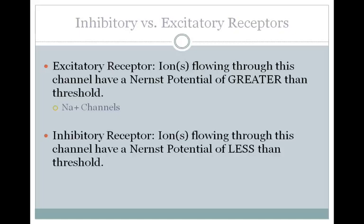Inhibitory receptors, on the other hand, will open up ion channels that allow an ion or ions to flow through that have a Nernst potential of less than threshold. This means that ion channel is going to want the membrane potential to be below threshold, which will keep the neuron from firing and inhibit it. Potassium and chloride channels are the two most common inhibitory channels. Potassium has an equilibrium potential that's well below threshold. If you open up potassium channels, potassium is going to leave the cell, cause an IPSP, and hyperpolarize the cell membrane potential.